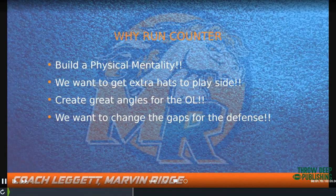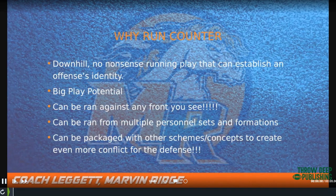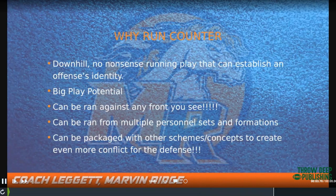We run counter downhill — out of pistol and sidecar in gun. It's a big play potential and can be run against any three-man or four-man front, against multiple personnel sets and formations. Formations you'll see today: wing trips, two-by-two with a wing, tight end wing with twins away, trips. It looks the same for us — same concept, different formations — and we'll also motion the H-back.